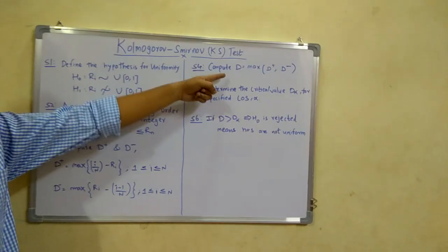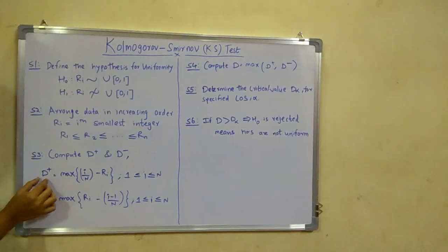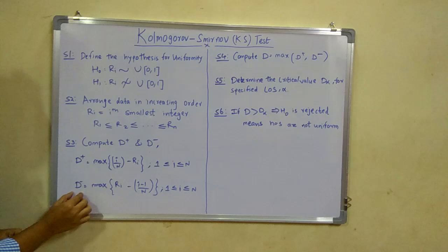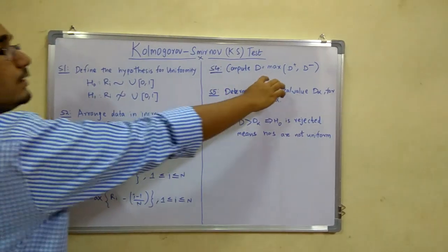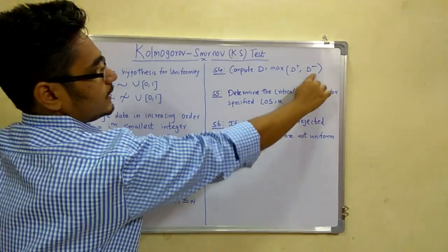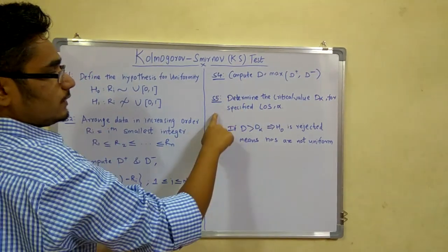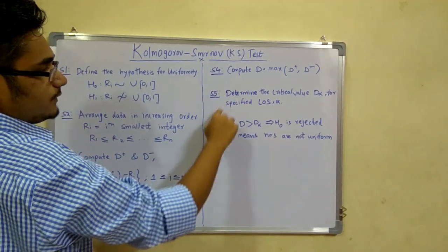Step 4 is to compute D. D is calculated from D+ and D-. You have to determine which value is bigger, that is, D equals the maximum of D+ and D-. After you compute this, move on to the fifth step.